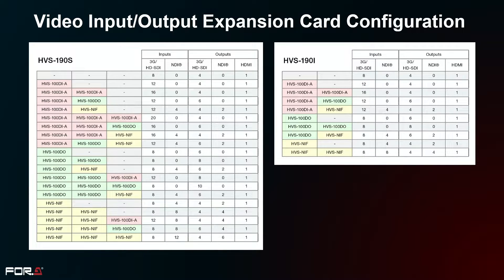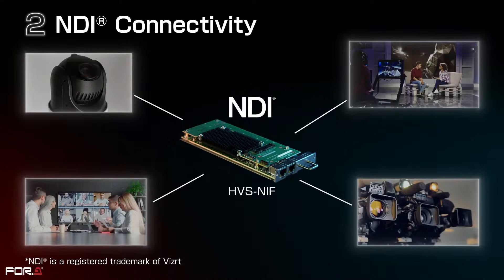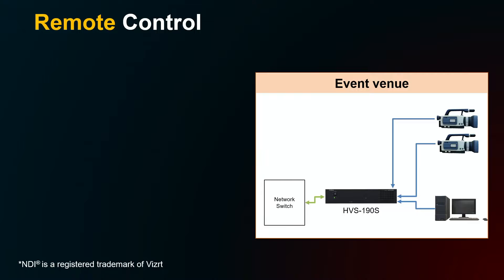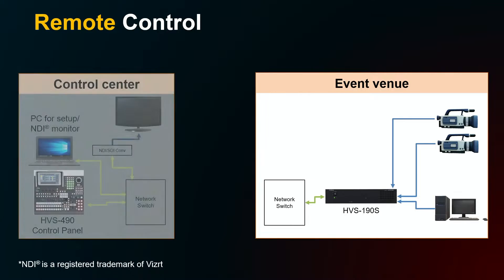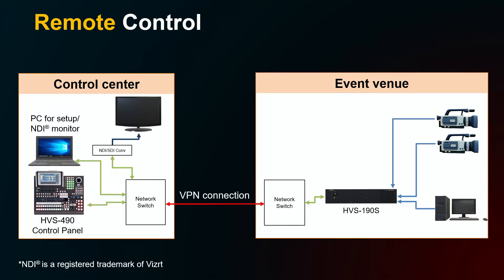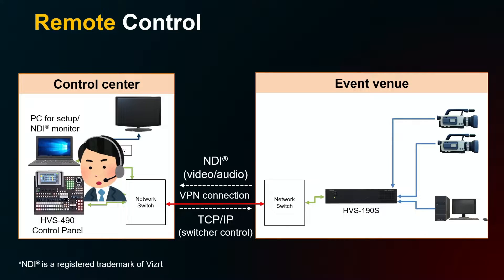The HVS 190 S installed at the event site can be remotely controlled via a VPN connection from a control panel installed in the control center, allowing operation without dispatching an operator to the site. The HVS 190 S can be connected to multiple control panels, so control panels can also be placed at the event site if necessary.